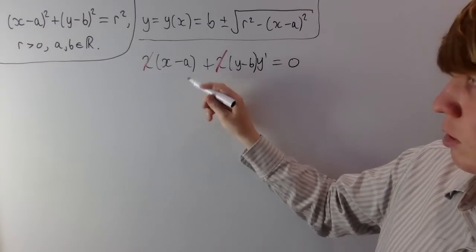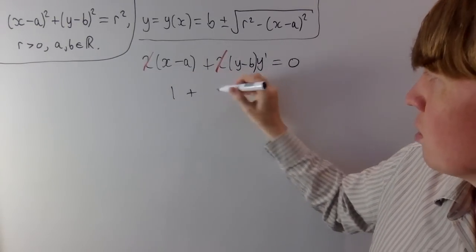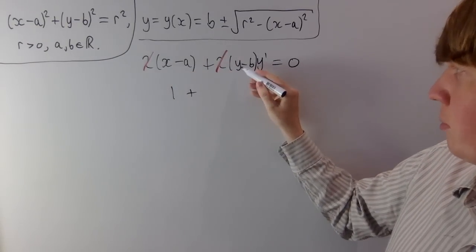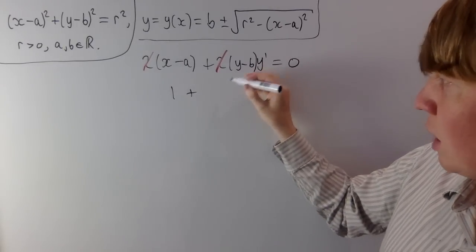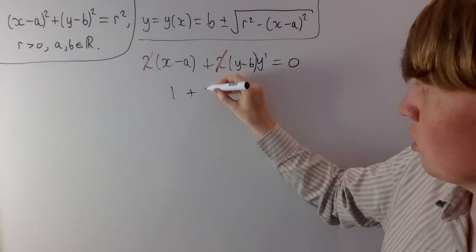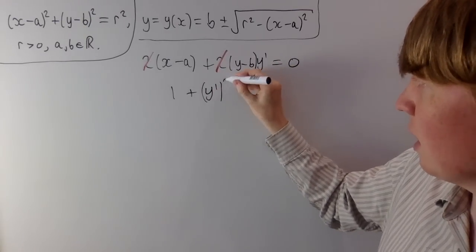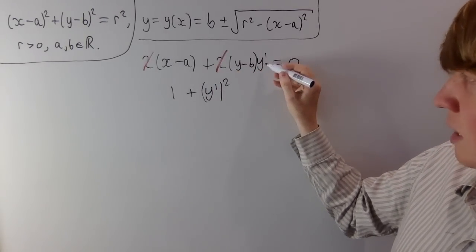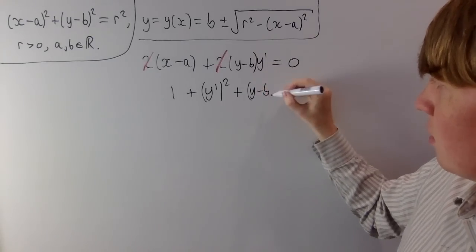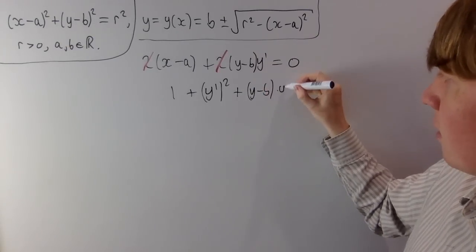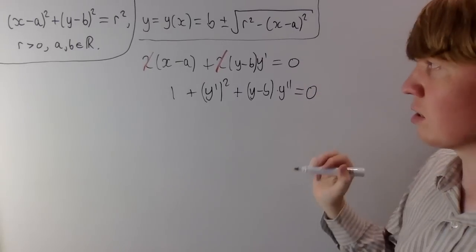We can't eliminate all constants yet, so let's differentiate again. We'll get rid of the two 2s first to make life easier. Differentiating now gives 1, then using the product rule when we differentiate y minus b we get dy dx — another factor of y dash — giving y dash squared. When we differentiate y dash we get y minus b multiplied by the second derivative y dash dash, and 0 stays as 0.